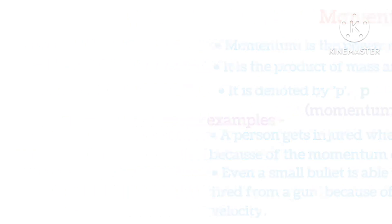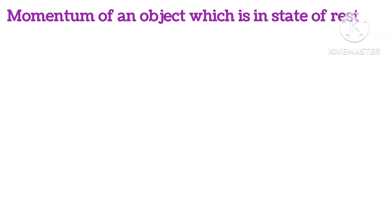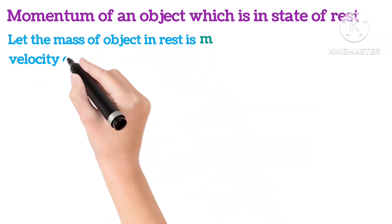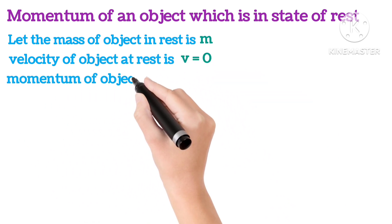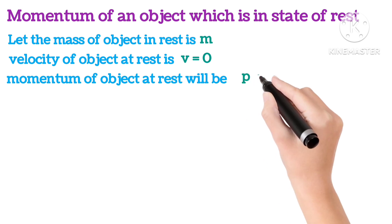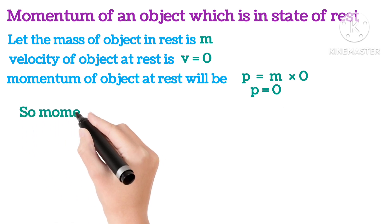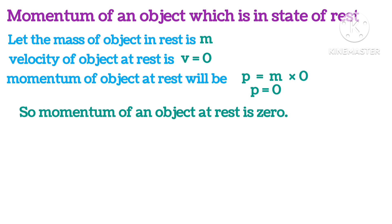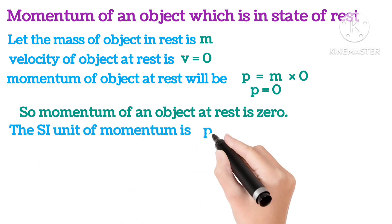Momentum of an object which is in the state of rest. Let's take the mass of an object at rest as M. The velocity of the object at rest is 0. So the momentum of the object at rest will be M × 0 = 0. The momentum of an object at rest is 0. The SI unit of momentum is kg·m/s.